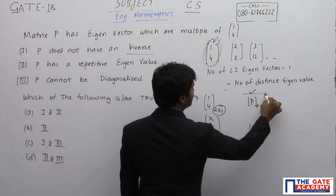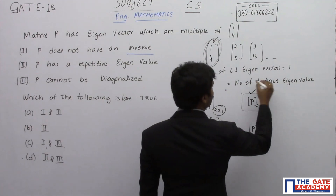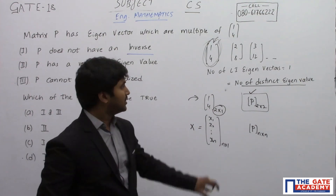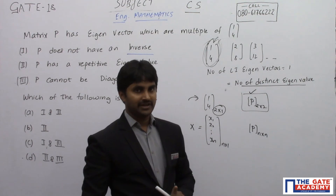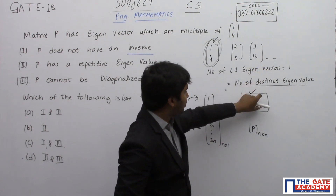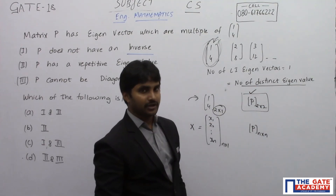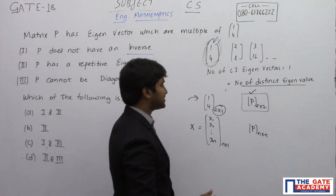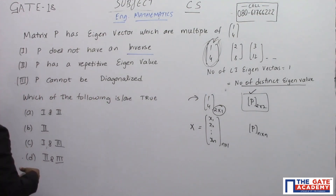Since P is a 2×2 matrix, there are 2 eigenvalues. But there is only 1 distinct eigenvalue, meaning both eigenvalues are repetitive in nature. The number of distinct eigenvalues equals the number of linearly independent eigenvectors, which is 1. So both eigenvalues are the same — they are repetitive. Therefore, the second statement is correct.